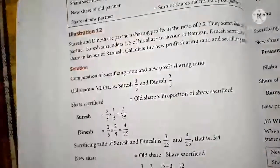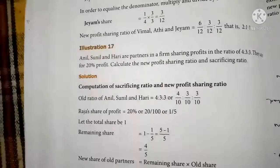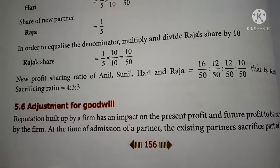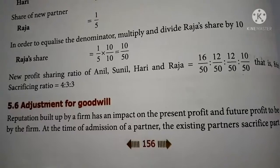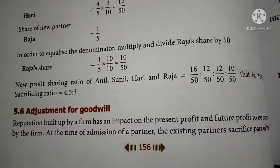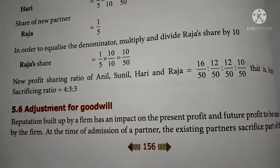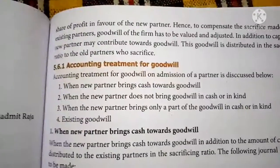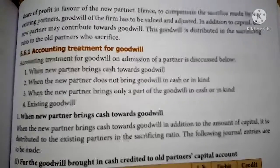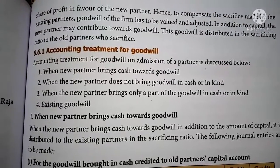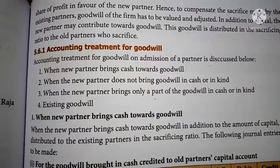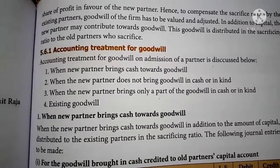Next, treatment of goodwill — that is adjustment of goodwill in a partnership firm at the time of admission of a new partner. The reputation built up by a firm has an impact on the present and future profit of the firm. At the time of admission of a new partner, the existing partners sacrifice part of their share of profit in favor of the new partner. Hence, to compensate the sacrifice made by the existing partners, the goodwill of the firm has to be valued and adjusted. In addition to the capital, the new partner may contribute towards goodwill, and this goodwill is distributed in the sacrificing ratio to the old partners.